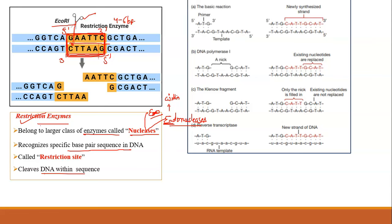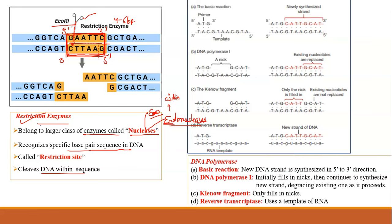Polymerase enzymes are essential in replication, synthesizing a new DNA strand in the 5' to 3' direction. The polymerase enzyme requires a template, a primer — since it cannot initiate elongation on its own — as well as dNTPs and magnesium as a cofactor. The polymerase binds, attaches the dNTPs, and elongates the strand.